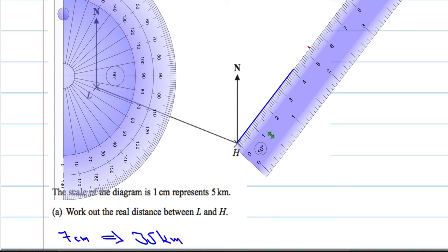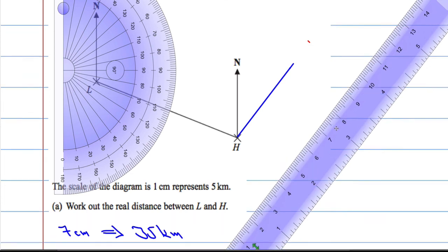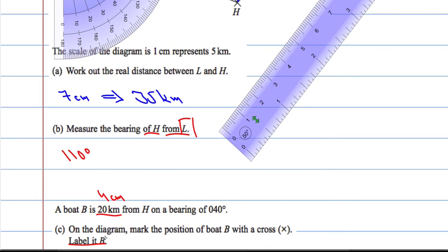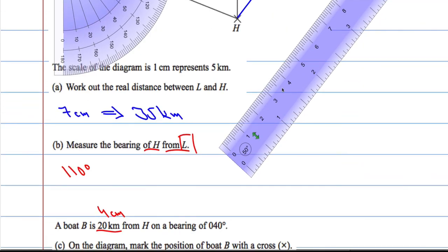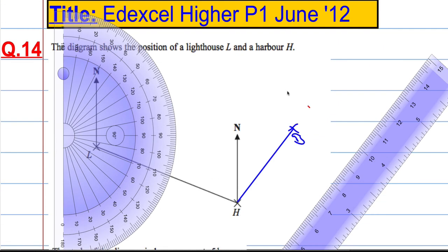Hopefully you get the idea. There we go. Now it's gone again. Anyway. And we've got to mark it with a cross and label it B. So mark it with a cross and label it B. And there we have it. It's all three parts of that question done.